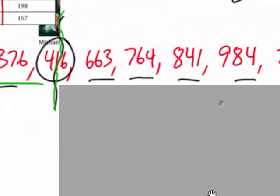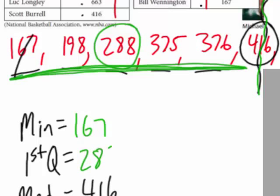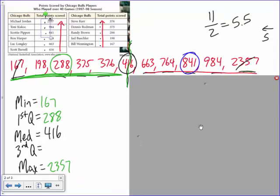So to find the first quartile, now I just look at just the first half, so these five numbers, and I find the median there. Well, that's nice and easy as well. It's 288. That's right in the middle. So I write that out, first quartile, 288. If there happened to be two numbers, remember you would just find the average of those two numbers. Same thing with the third quartile. I have a number right in the middle, 841, so that is my third quartile.